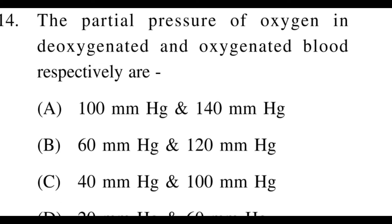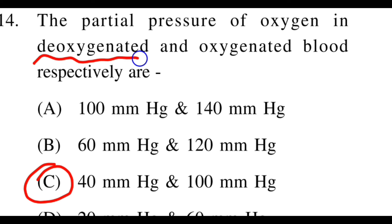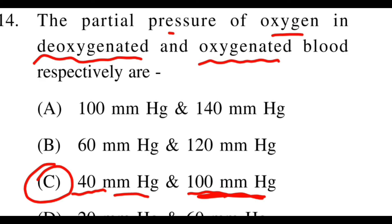Next question: The partial pressure of oxygen in deoxygenated and oxygenated blood respectively? Options: A: 100 mmHg and 140 mmHg, B: 50 and 120, C: 40 and 100, D: 20 and 60. The right option is C. Deoxygenated blood has 40 mmHg partial pressure of O2, and oxygenated blood has 100 mmHg.